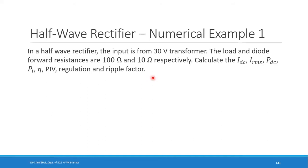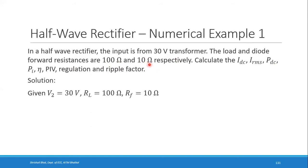First, identify what is given. The input is from a 30 volt transformer, meaning the secondary voltage V2 is 30 volts. The load resistance RL is 100 ohms and the diode forward resistance RF is 10 ohms.